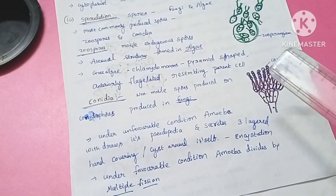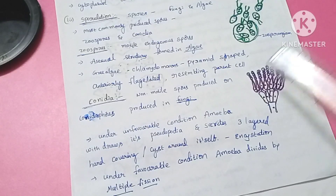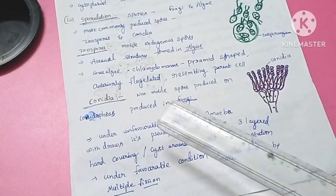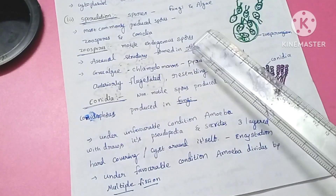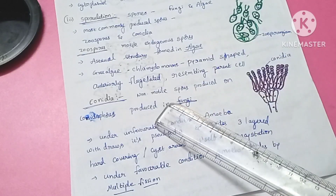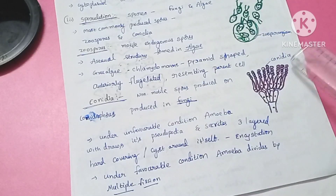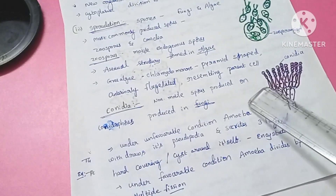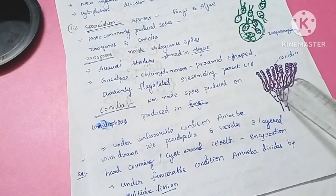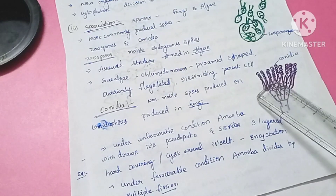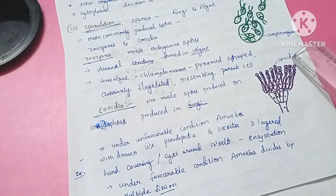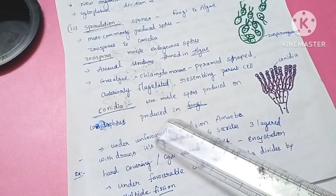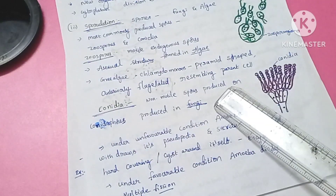The next type is conidia. Conidia are asexual spores produced in fungi. While zoospores are motile, conidia are non-motile spores. Conidia are formed on structures called conidiophores. These conidiophores bear the conidia, and these non-motile spores are found on fungi.